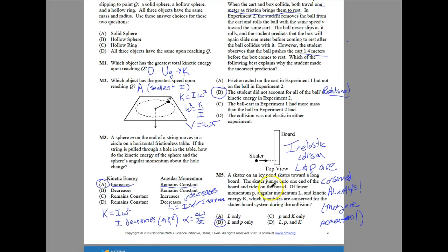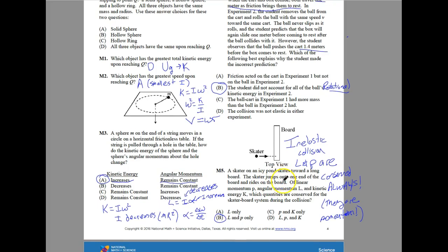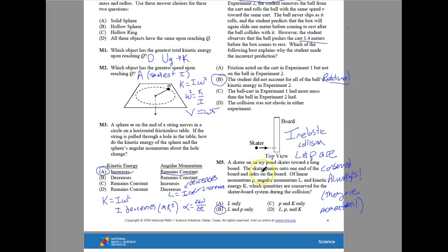For number five, we have a skater on an icy pond. Skates toward a long board, so we're looking at this from top down. The skater jumps onto the end of the board and rides the board. Of the linear momentum, angular momentum, and kinetic energy, which ones are conserved for the skater board system during collision? This is an inelastic collision. And both the angular and the linear momentum are conserved always in this inelastic collision. So that's what we're going to say. It is actually going to be these two.